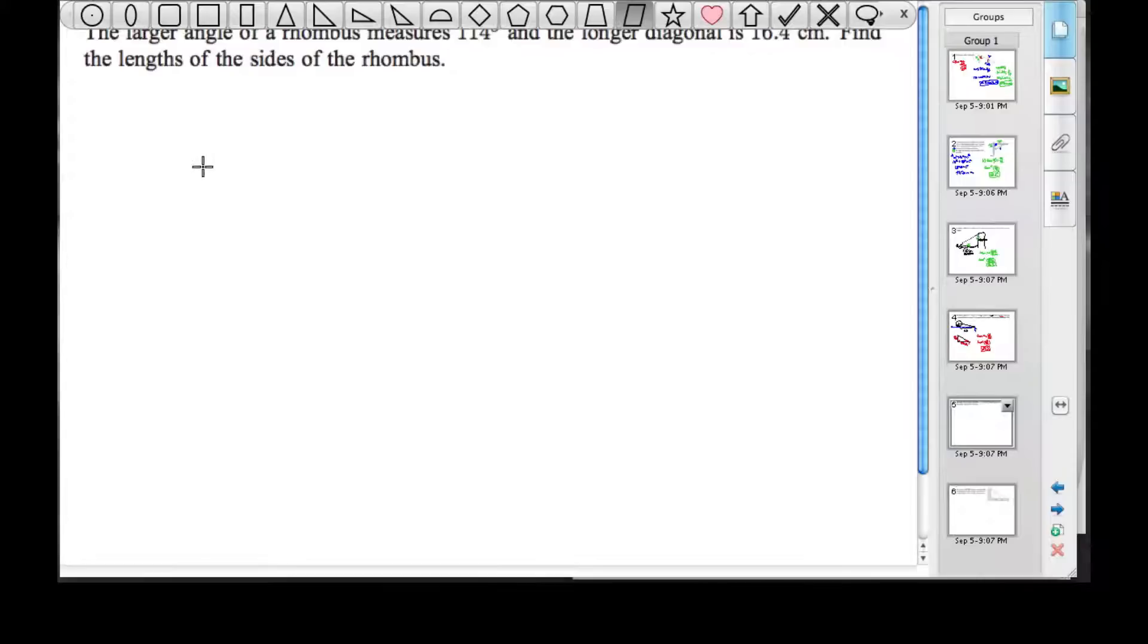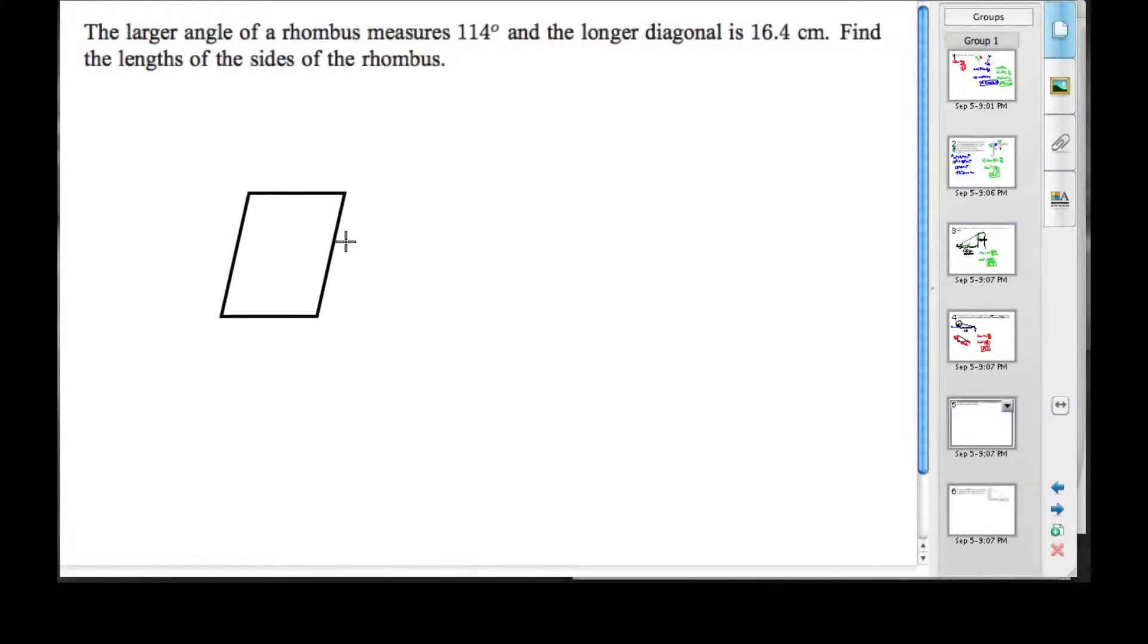First, let's draw ourselves a rhombus. A rhombus is a parallelogram where all sides are the same length. The larger angle, this one here, is 114 degrees. The longer diagonal, that's this one, is 16.4 centimeters.